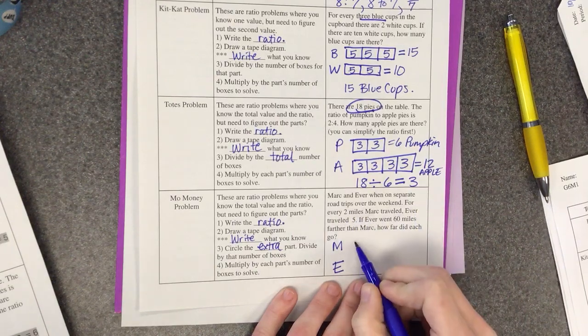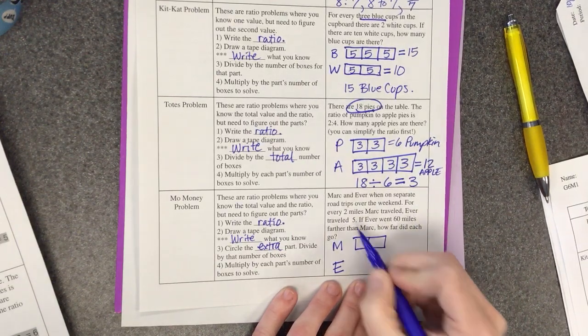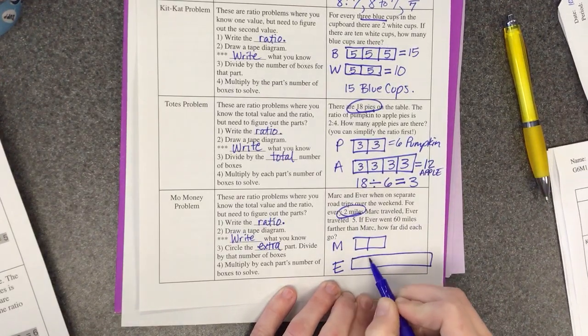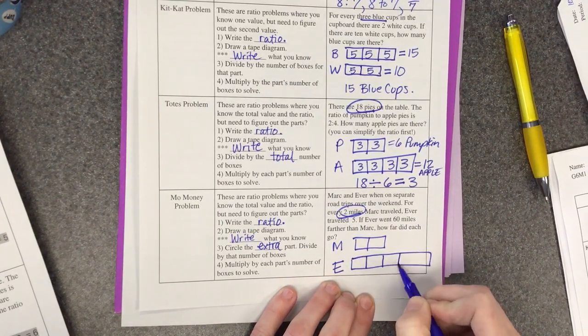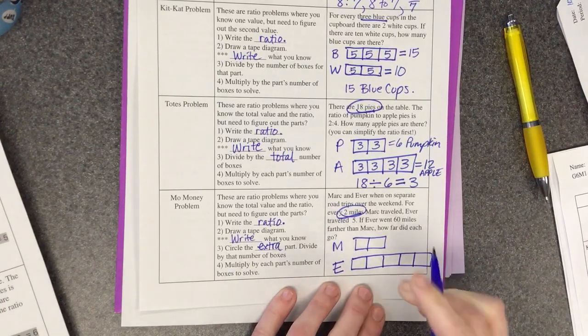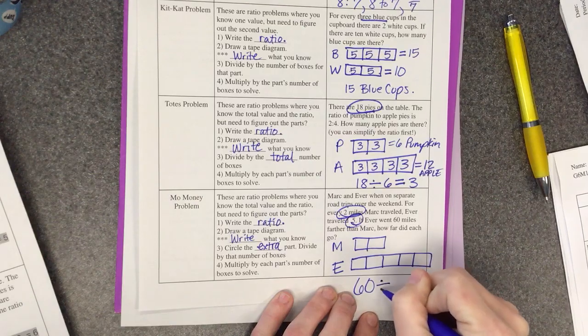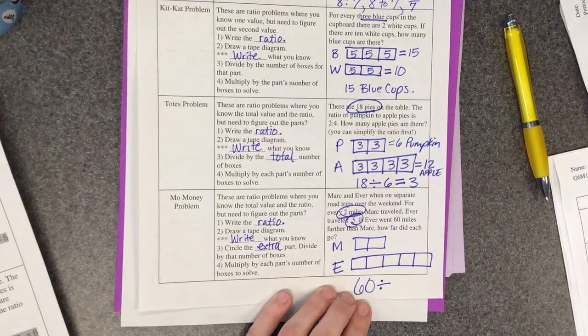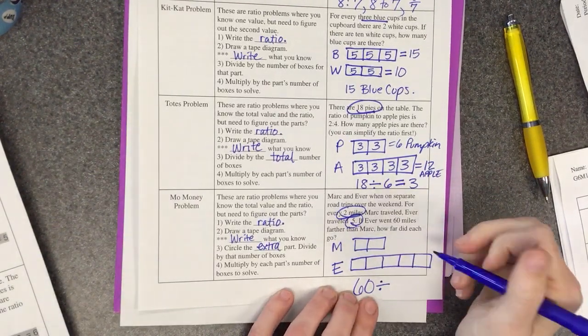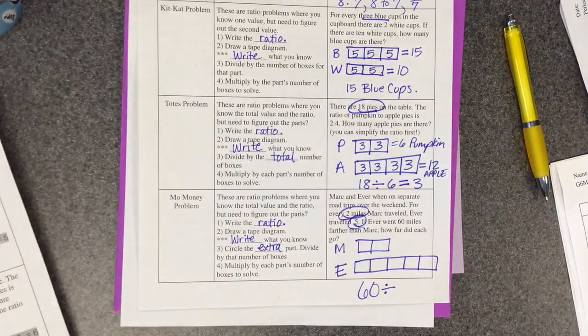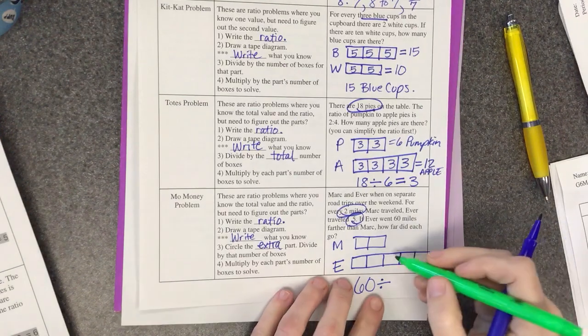Now the big number they gave us was 60 divided by, well this is a Mo Money problem. So how many more or extra boxes do we have for Ever than? Three, four, four, no you're right, three. Three extras, it's all right I still like you. All right, what's 60 divided by three? 20, 20, excellent.